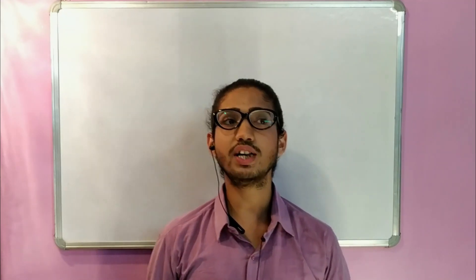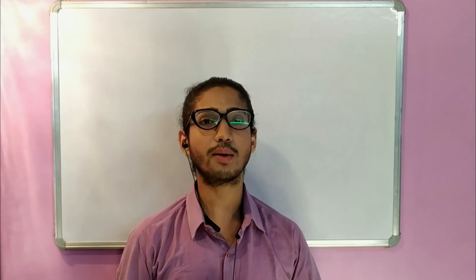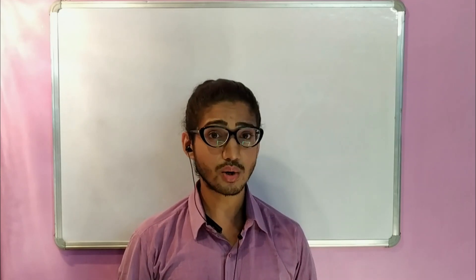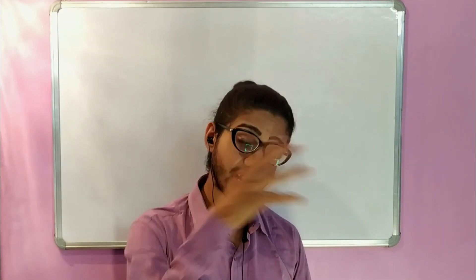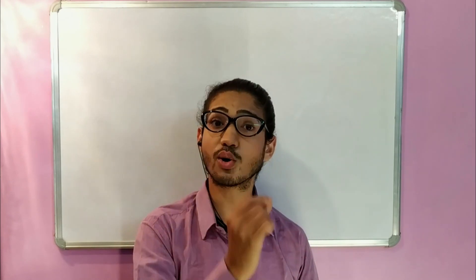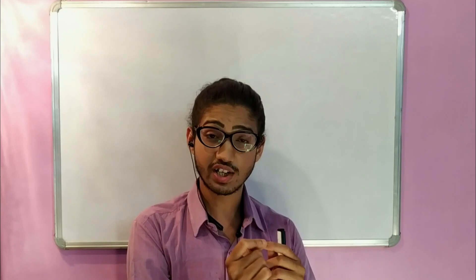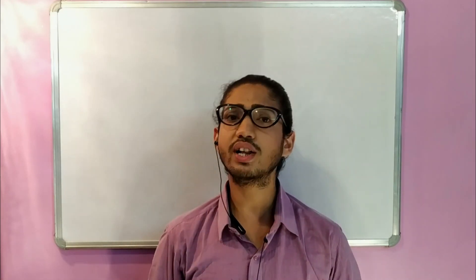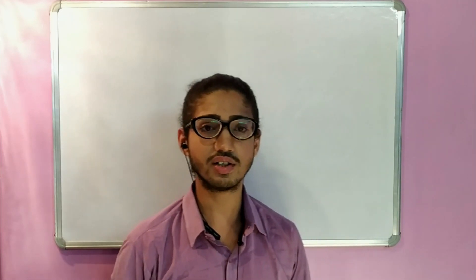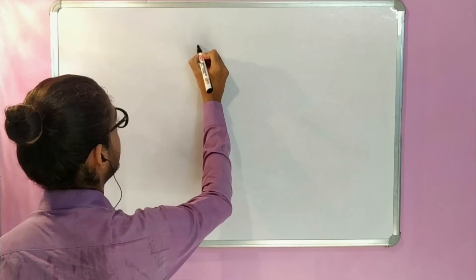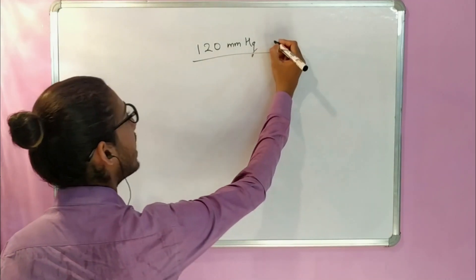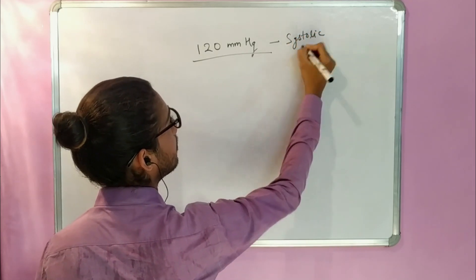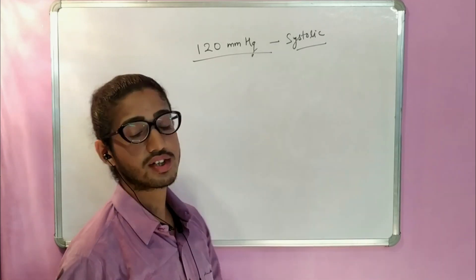Blood pressure is reported in two ways: systolic pressure and diastolic pressure. Systolic pressure is the pressure during systole — when the heart is contracting and blood is ejected out. This is the higher limit because a lot of pressure is generated during ejection, and it is about 120 mmHg. The unit mmHg is used to measure blood pressure.